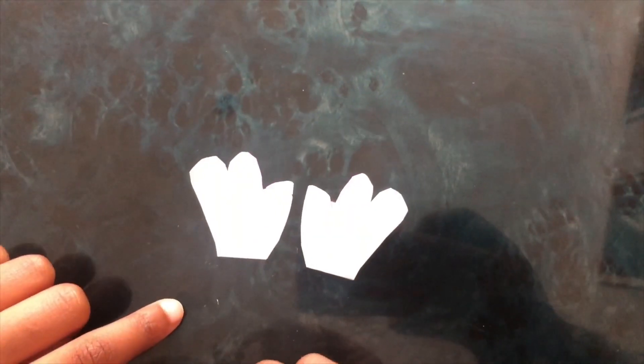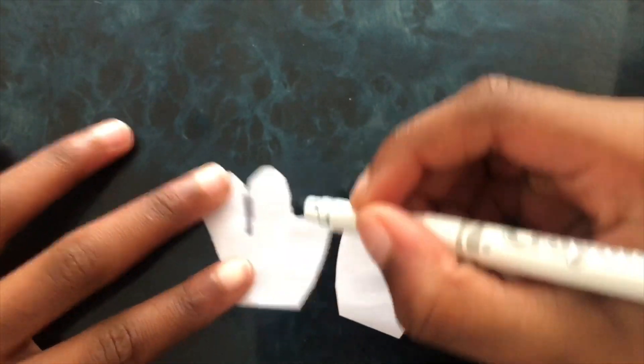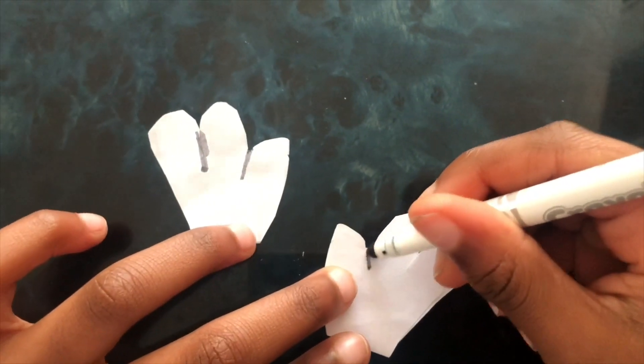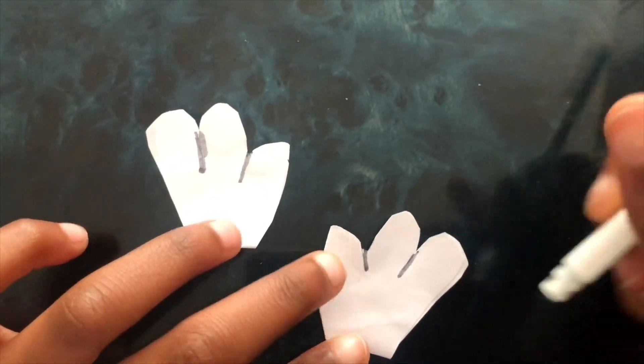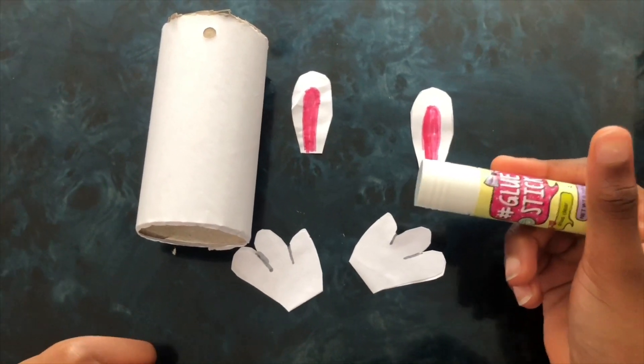Finished. Now we're going to color in the inner part of the bunny's ear. I'm just going to draw the lines for the toes.